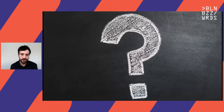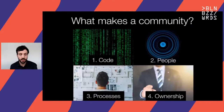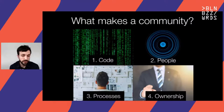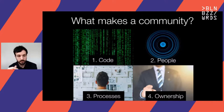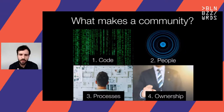Instead of building a community from scratch, maybe there's already a community that fits your needs, and you could join an existing one and focus on what is important there for you. So, what makes a community? There are four topics: number one is code, number two is people, number three is processes, and lastly, ownership — which is probably almost the most important point. Let's start with code: if you want to build a community, you have to build it around a meaningful piece of software.